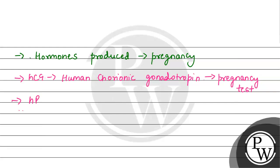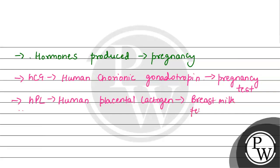Next हमारा hormone आता है जो है HPL, which is Human Placental Lactogen. Human Placental Lactogen का अगर हम main role देखें, तो ये breast milk production में help करता है. इसका main role breast milk production में आता है, and दूसरा role जो होता है वो है fetal growth में.